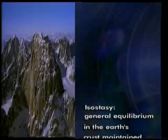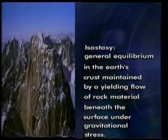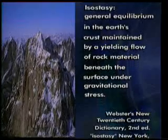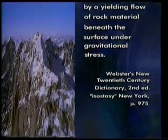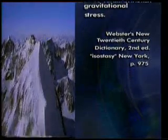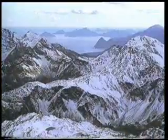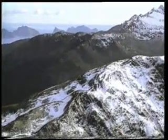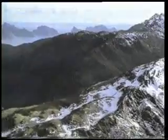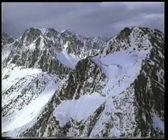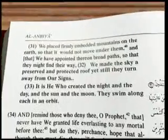Isostasy means the following: general equilibrium in the earth's crust maintained by a yielding flow of rock material beneath the surface under gravitational stress. This vital role of mountains, discovered by modern geology and seismic research, was revealed in the Quran centuries ago as an example of the supreme wisdom in God's creation: 'We placed firmly embedded mountains on the earth so that it would not move under them.'